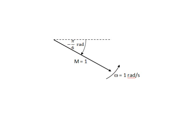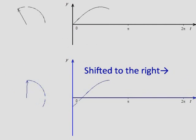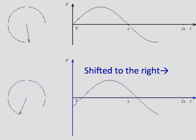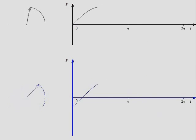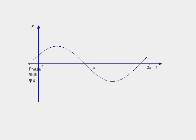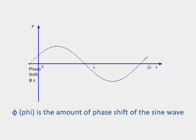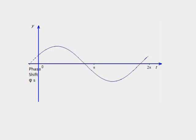Our second example assumes a phase angle of minus pi over 6 radians. This time, the sine wave appears to be shifted to the right when compared to the original. The equation of these types of sine wave is y equals sine of t plus alpha. We have already seen that alpha and phi are related. Phi is also related to omega by phi equals alpha over omega.